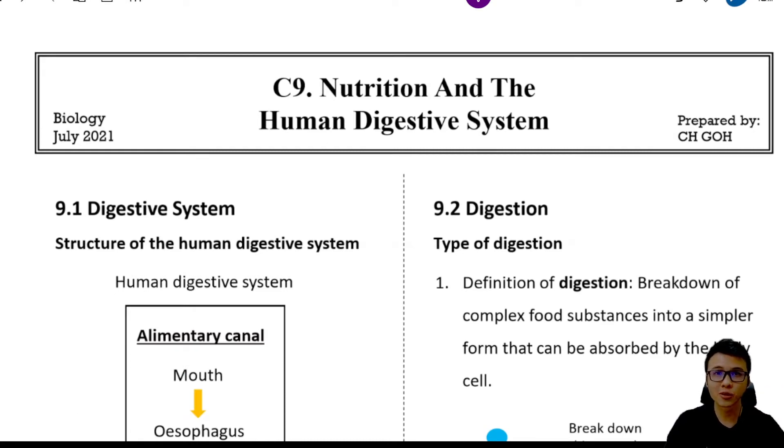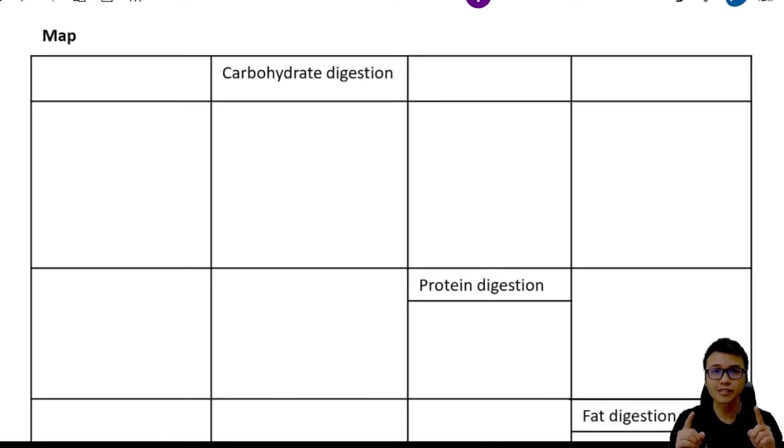As most of you already know, there are a ton of things to memorize in this chapter, especially the enzyme reactions that happen in our mouth, stomach, small intestine, or duodenum. But no worries, today I'm going to teach you the easiest way to memorize all these enzyme reactions. The only way to do this is to put all the information into one single table. So make sure you have a pen and paper with you right now. Complete the table after me. Let's do it.